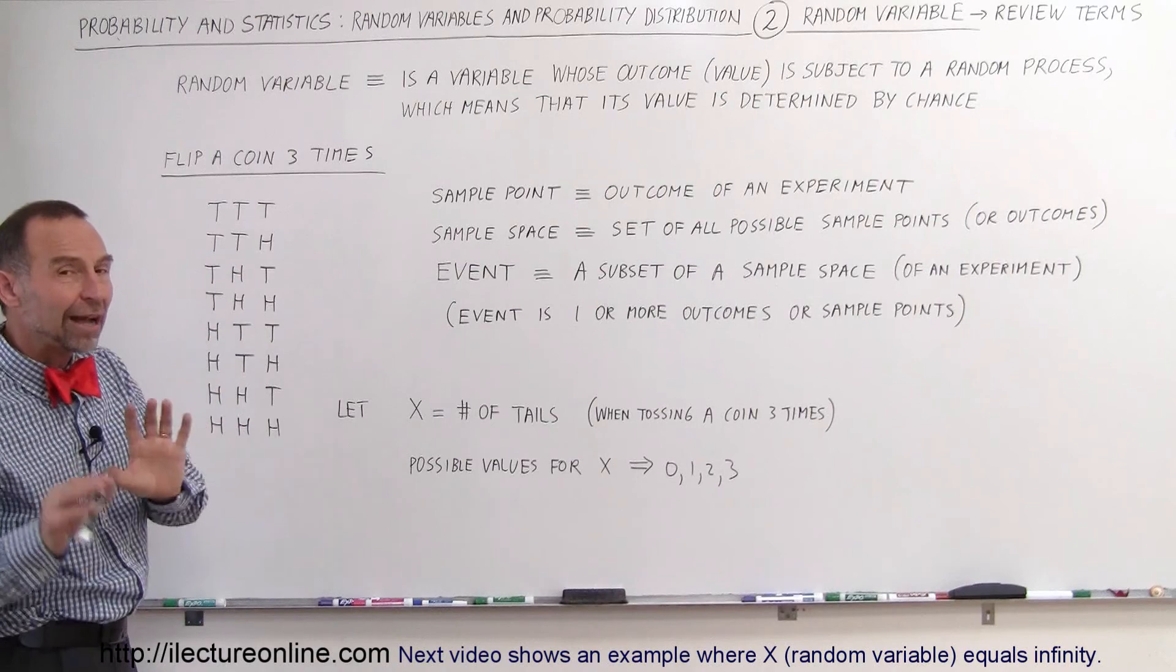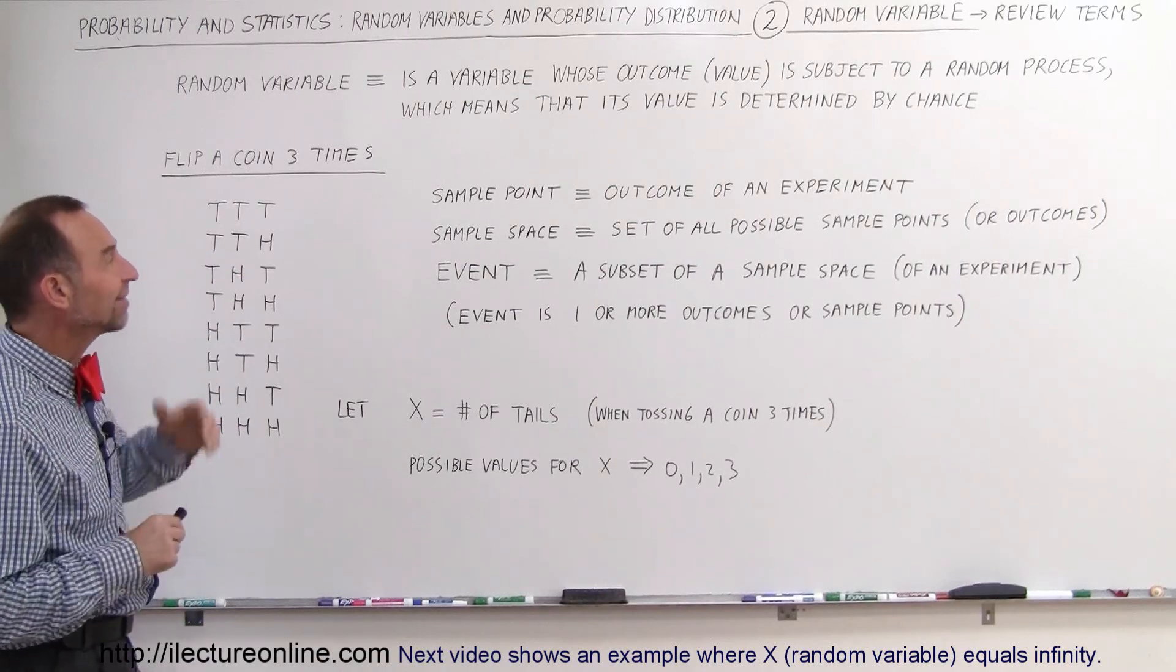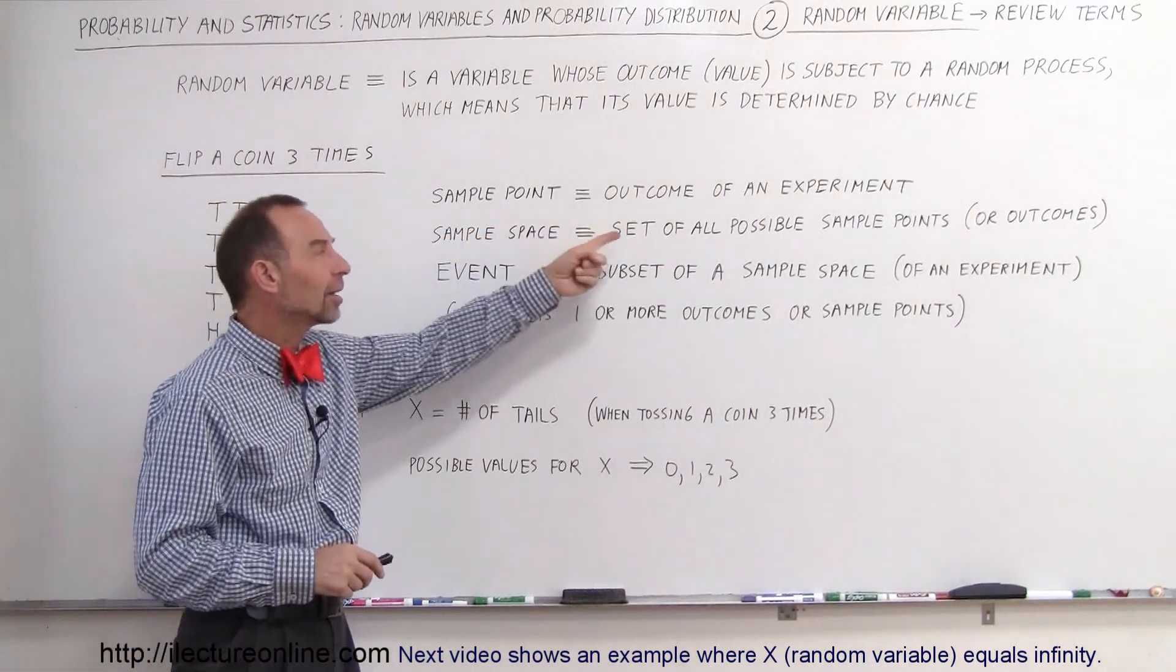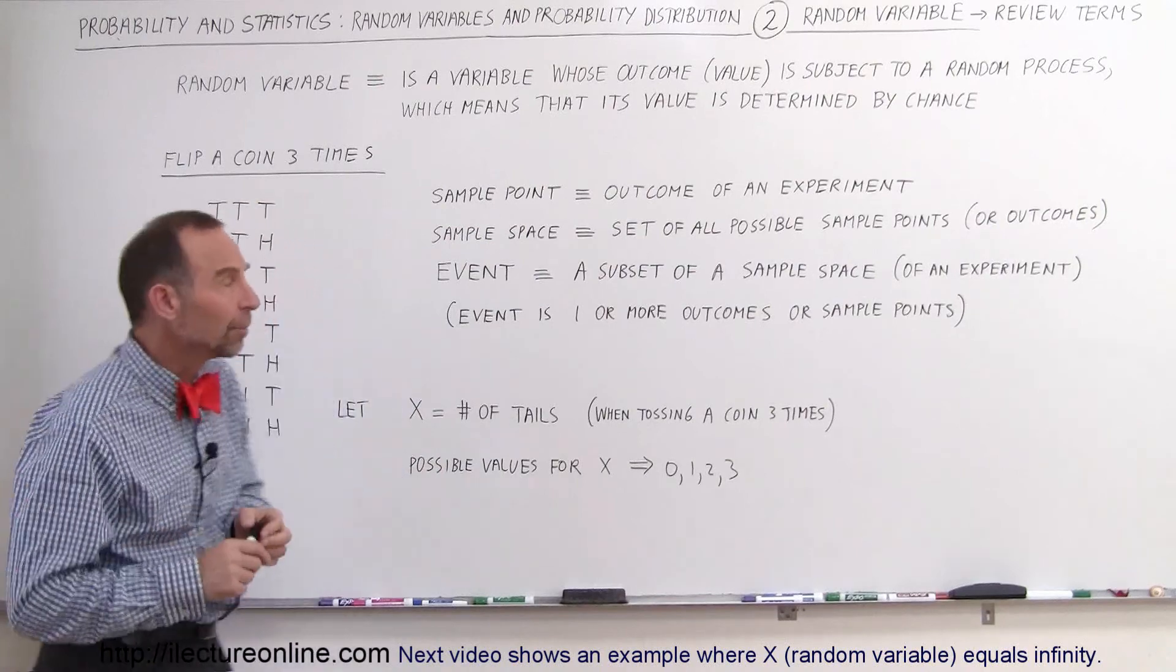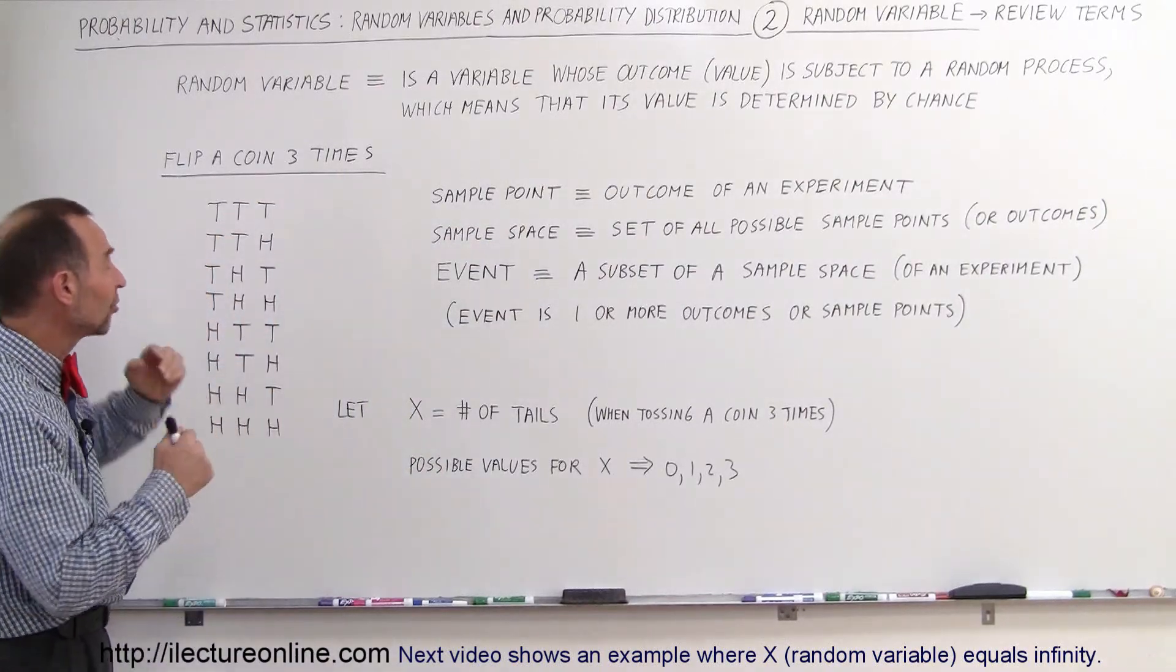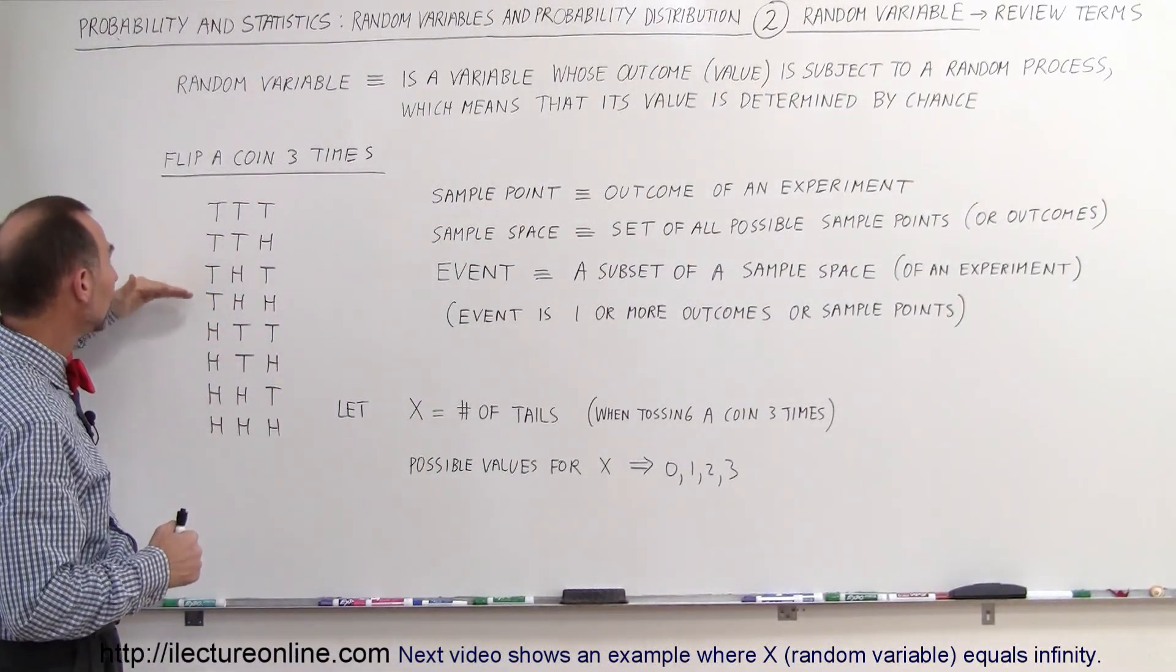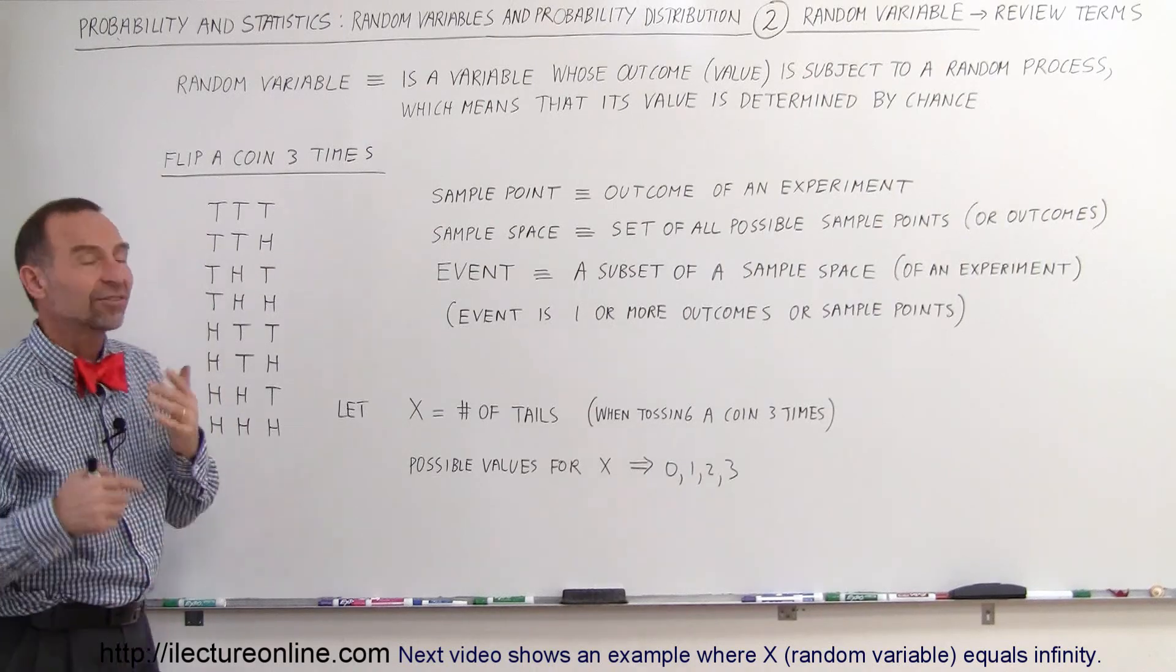And now we're going to define some specific terms. A sample point is the outcome of an experiment. It's a simple outcome or a single outcome. So any one of these could be considered a sample point.